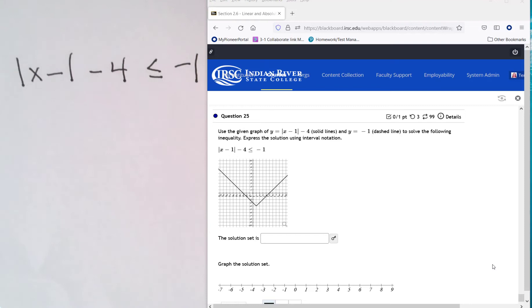So this was 25 on 2.6 and the first part they said given the graph of y equals the absolute value of x minus 1 minus 4. They're only looking at the left hand side of this. They're saying y equals that. The graph of that is this absolute value graph which is like a v. It's a solid line.